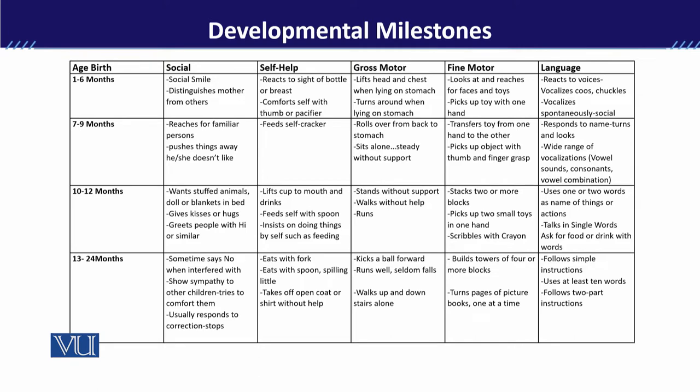If you see on this chart, there is a column in which I have mentioned the age from birth, and then there are 5 other columns corresponding to these 5 categories. In the age of 1 to 6 months, the child is able to do the social smile and distinguishes mother from others. Socially, جب ہم یہ بات کرتے ہیں کہ بچہ interact کر سکتا ہے اپنی مدر سے اور لوگوں کو smile پاس کرنے کی ability ہوتی ہے، وہ develop ہو جاتی ہے 1 to 6 months میں۔